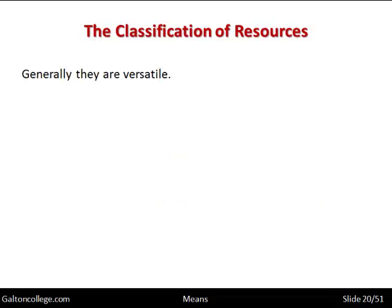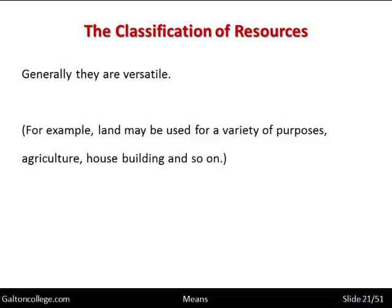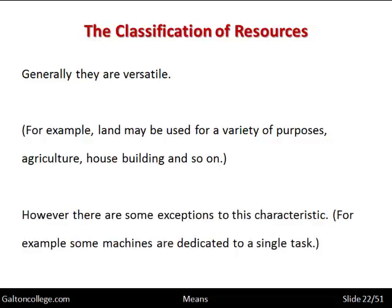Generally resources are versatile. For example, land may be used for a variety of purposes — from agriculture to house building to sports facilities — so land is versatile. There are some exceptions: sometimes machines are built for a single task, and that's not versatile — it's locked in. If it's built for a specific task, it can't do anything else.